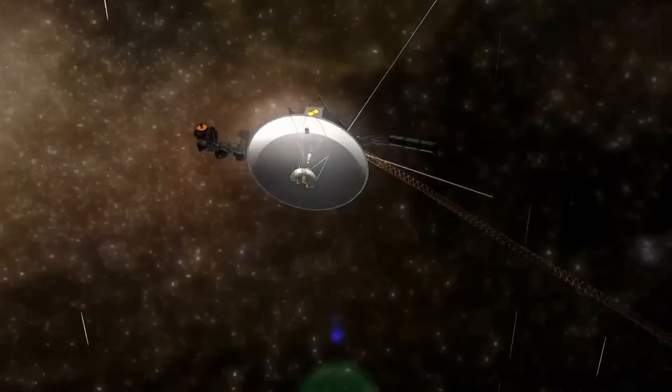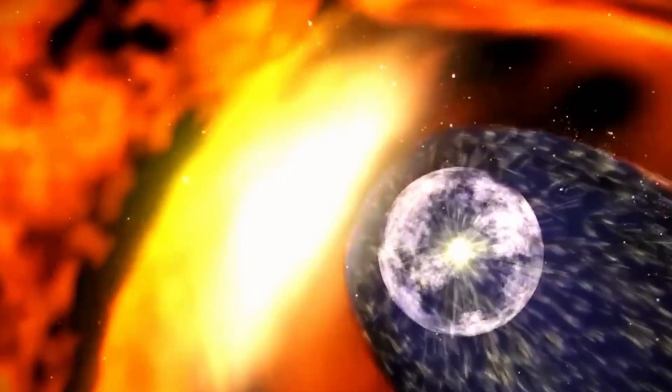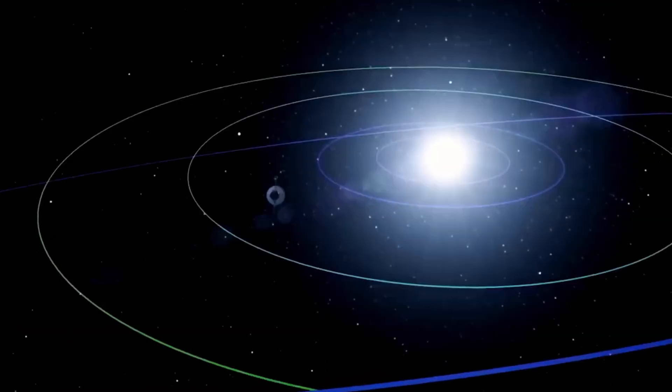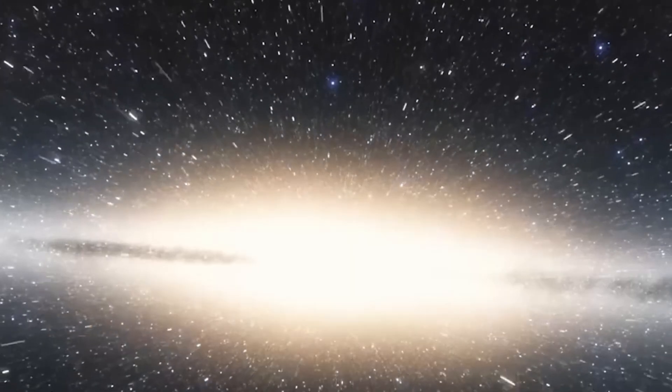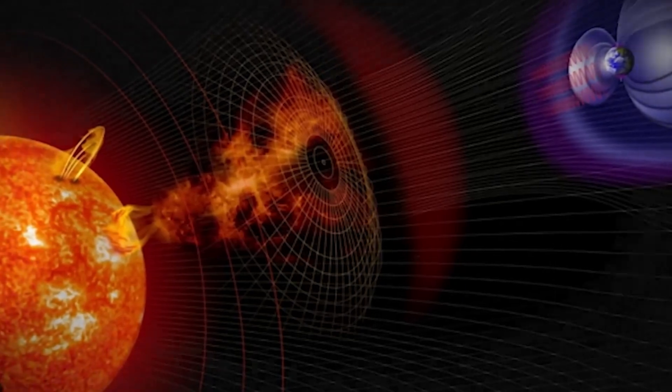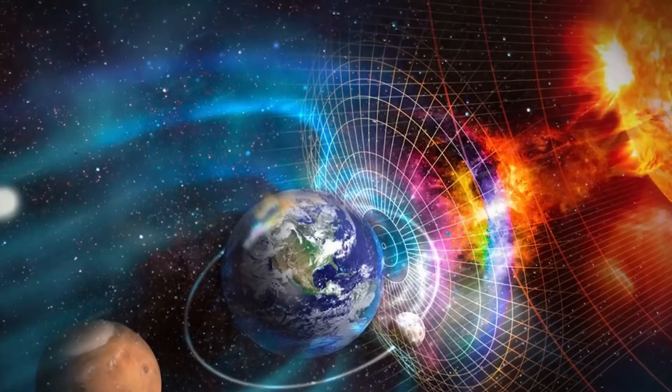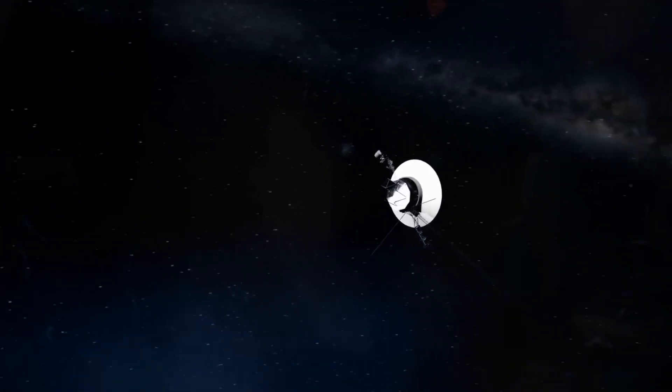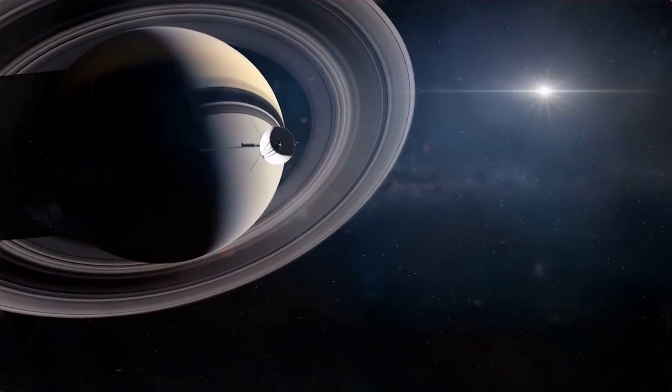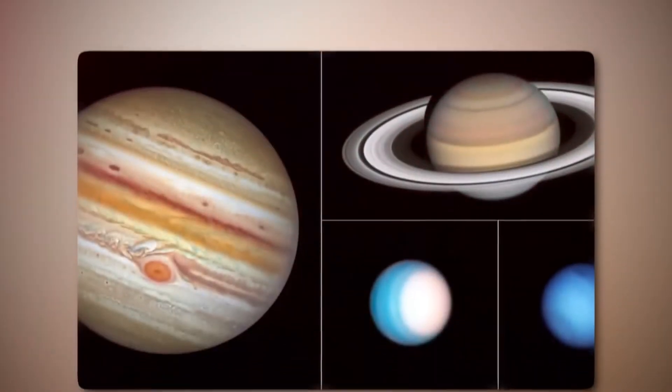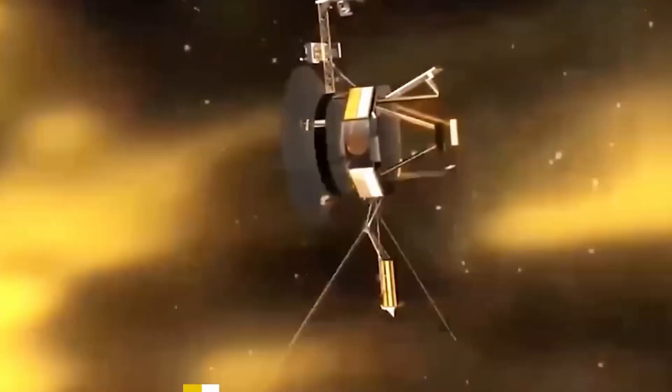In a billion years, the Voyager probes will have journeyed far beyond the realms of the solar system into the vastness of interstellar space. By that time, Voyager 1 and 2 will be unrecognizable, their instruments long silent due to their power sources running out. However, they will still travel through the galaxy on a path that will eventually take them 50,000 light-years away from the sun. Voyager 1 is currently heading toward a distant star called AC plus 793888, while Voyager 2 is on a trajectory toward Ross 248 in the Andromeda constellation.